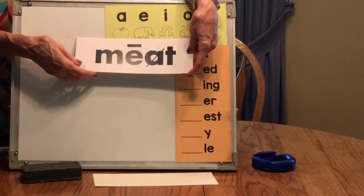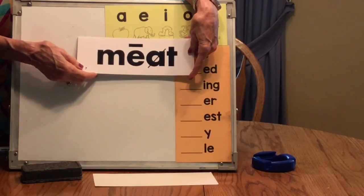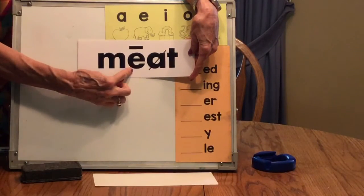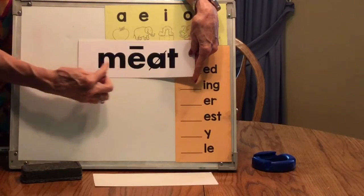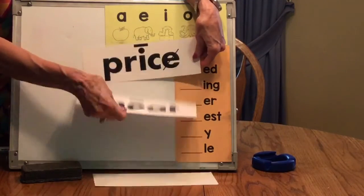Two vowels walk together, and they play a game. The first vowel speaks. He says his name. The vowel says E, and the word is meat. The vowel says E, and the word is meat.